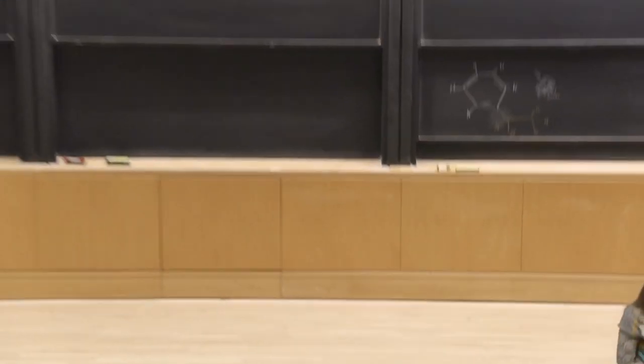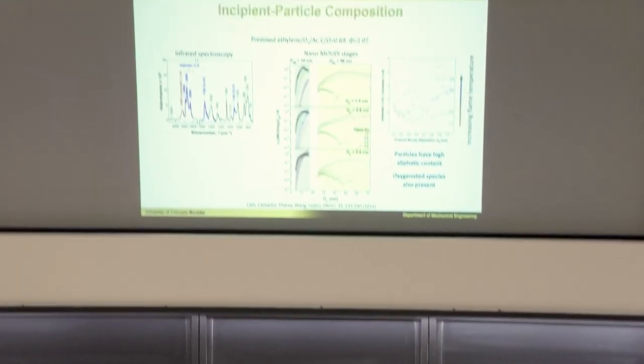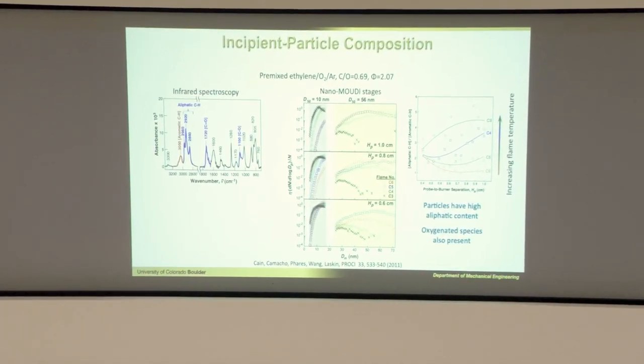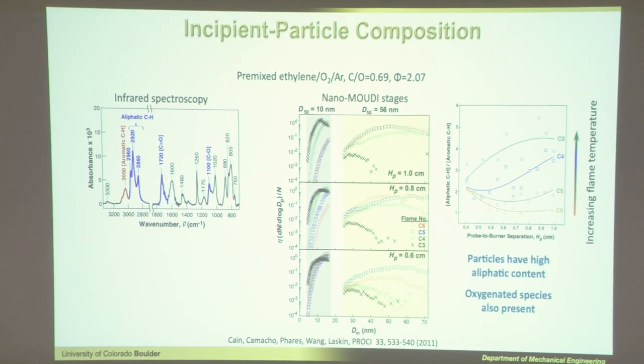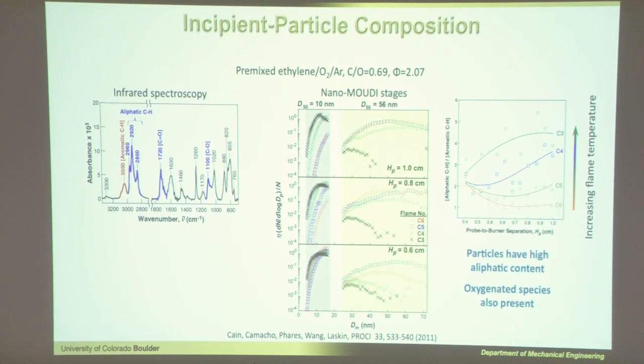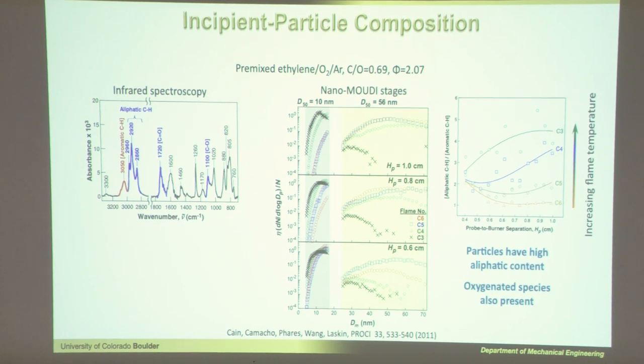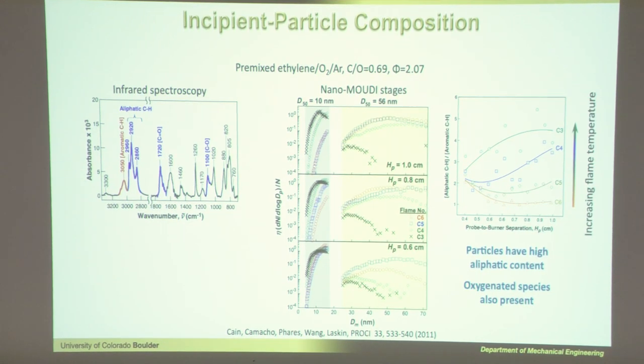This was totally unexpected — we need to be doing different types of experiments. Particles have high aliphatic content and oxygenated species. We didn't expect the oxygenated species either, but a lot of people have since seen oxygenated species using IR spectroscopy in particles.